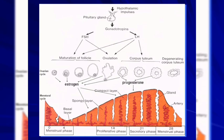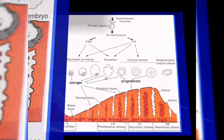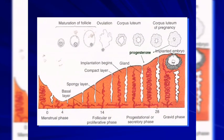The cycle then starts again: the proliferative phase of the endometrium runs from day 6 to day 13, driven by estrogen from the maturing follicle. From day 14, after ovulation, progesterone acts on the endometrium. The estrogen causes growth of the endometrial glands and thickening of the endometrium, preparing it for potential implantation.